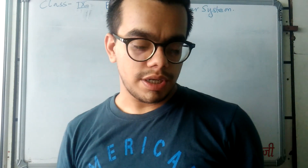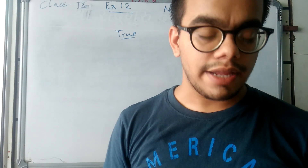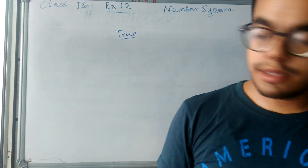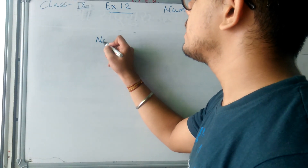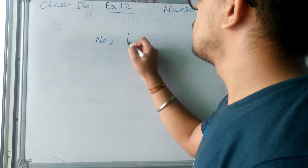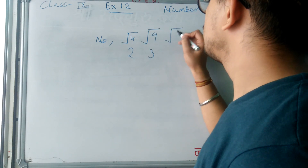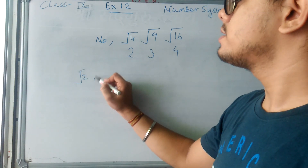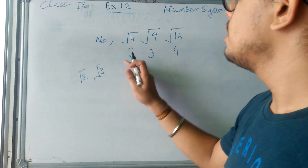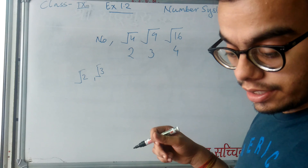Now let us move to question number 2: are the roots of all positive integers irrational? The answer is also no. Roots of all positive integers are not irrational because the square root of 4 is 2, square root of 9 is 3, square root of 16 is 4. We do have root 2 and root 3 as irrational, but there are certain numbers whose square root is rational.